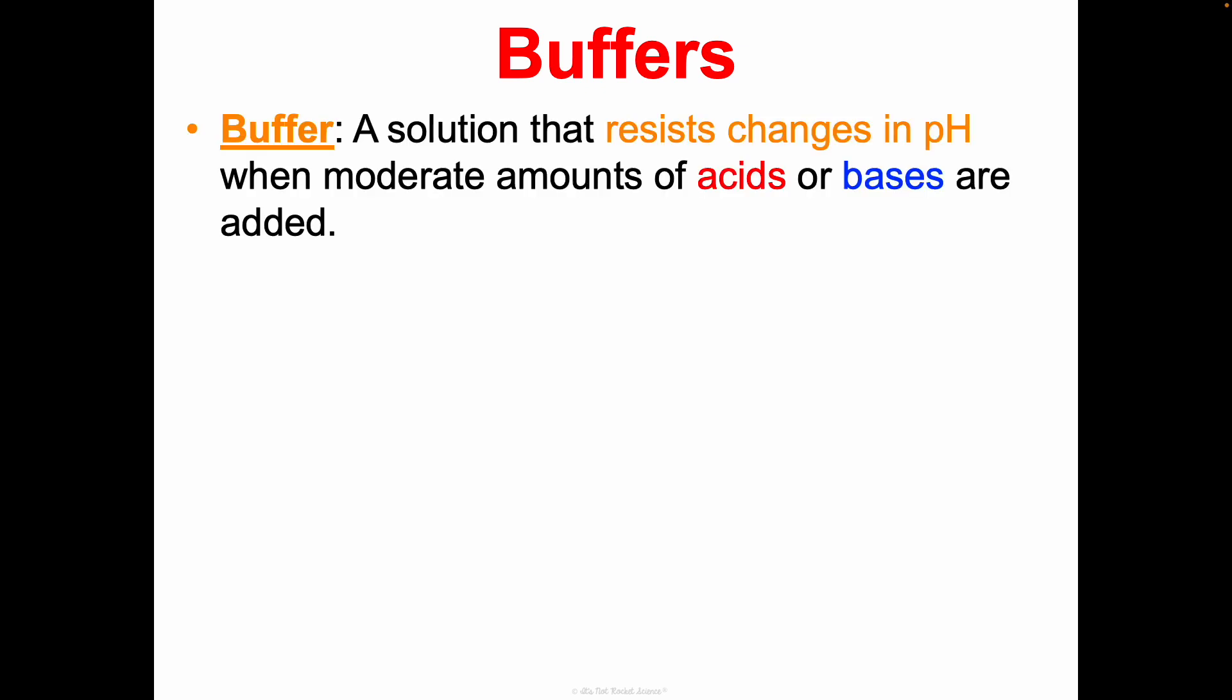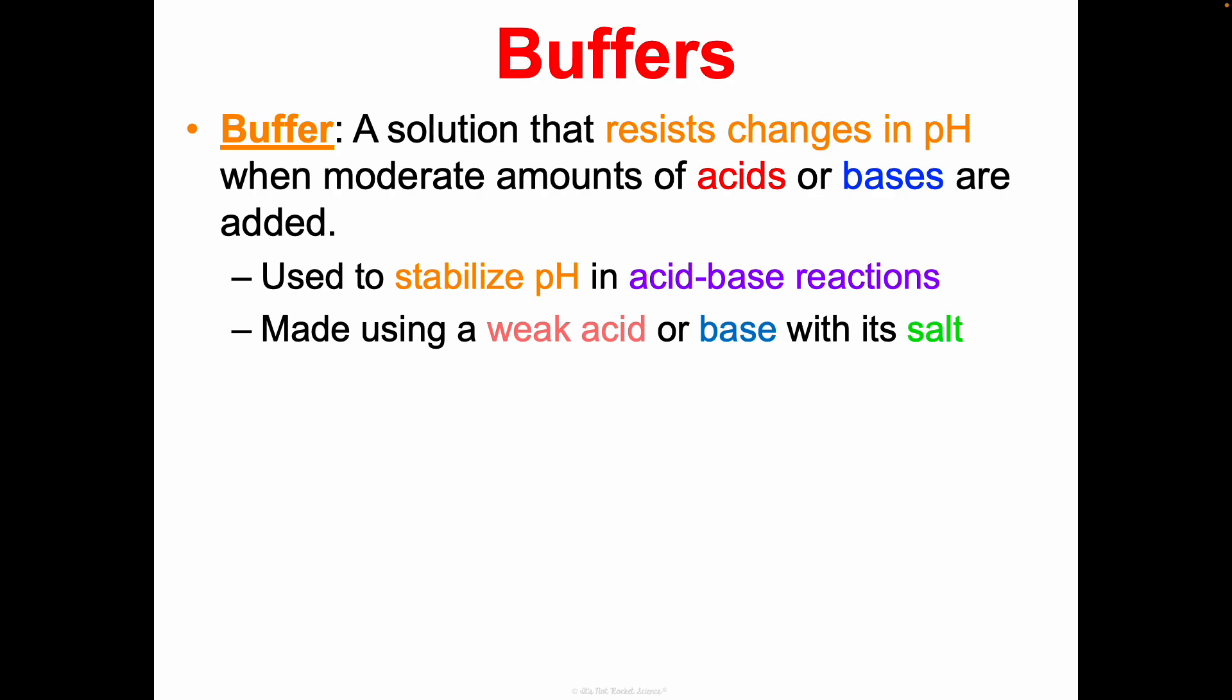Now, let's talk about buffers because this is a really important application for acid and base reactions. A buffer is a solution that resists changes in pH when moderate amounts of acids or bases are added. So you'll have a buffer, and it will stabilize the pH in acid and base reactions. And it won't keep it the exact same, but it will keep it within a range. Buffers are so important biologically. Blood is like the most common popular example of this. So you make a buffer using a weak acid and its corresponding salt or a weak base and its corresponding salt.